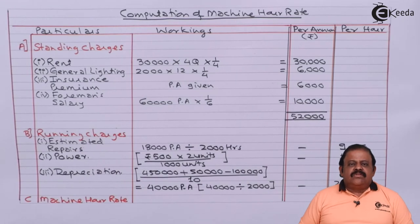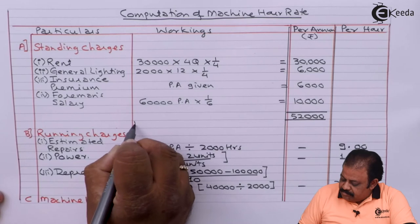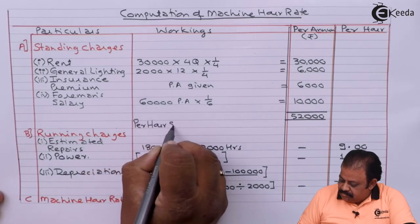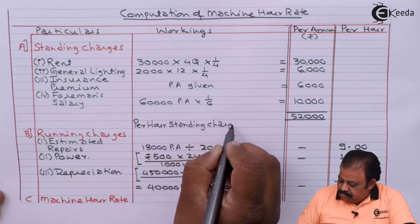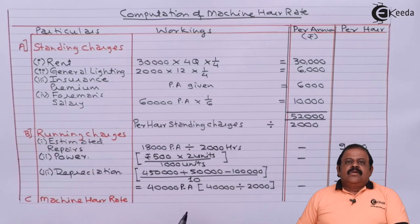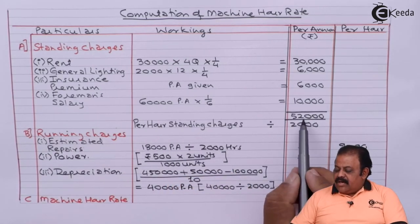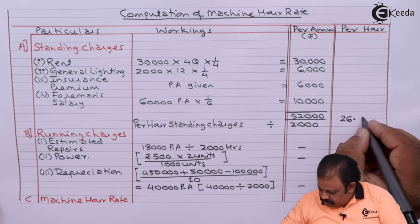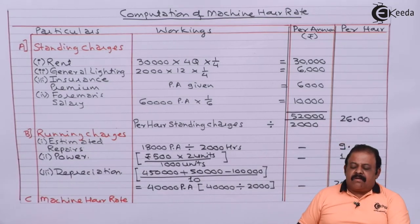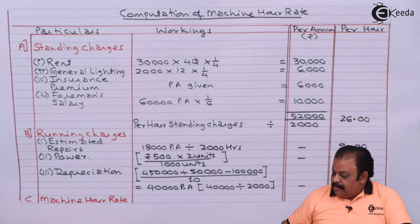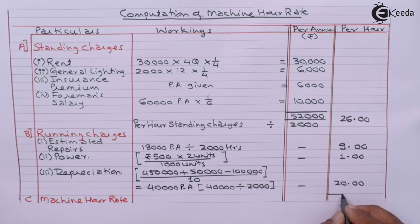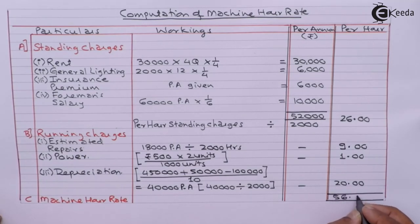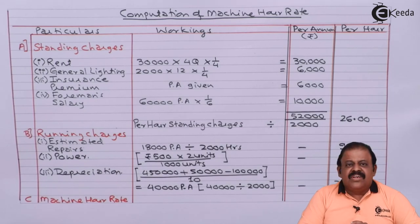We got all standing charges (fixed costs) and adding them gives rupees 52,000. To get standing charges per hour, we divide 52,000 by 2,000 hours per annum, giving rupees 26 per hour. Adding all amounts together gives the machine hour rate of rupees 56. Thus we have calculated the machine hour rate.